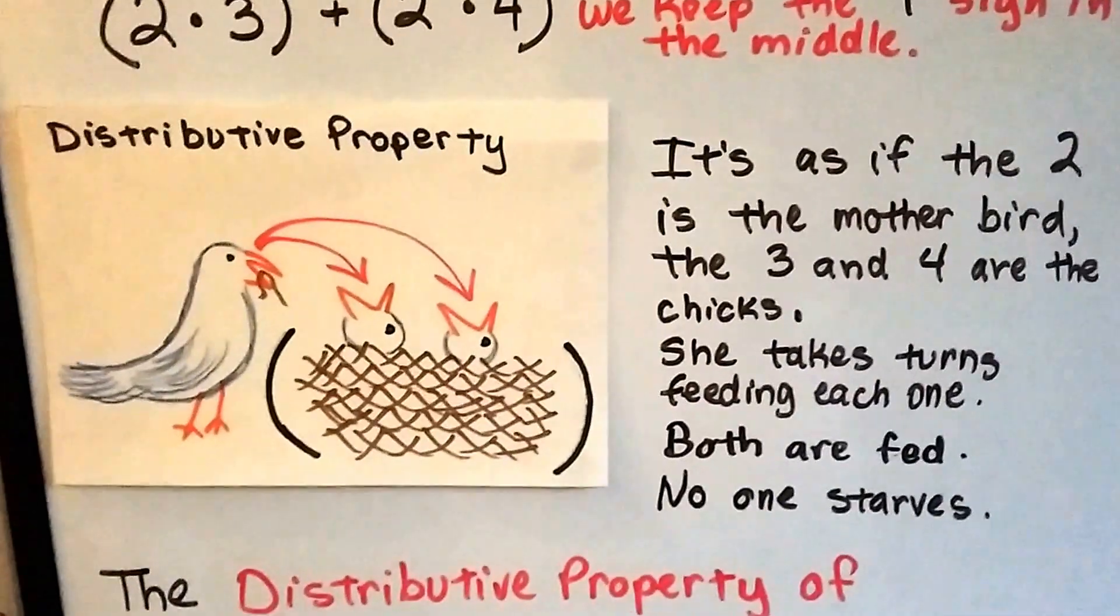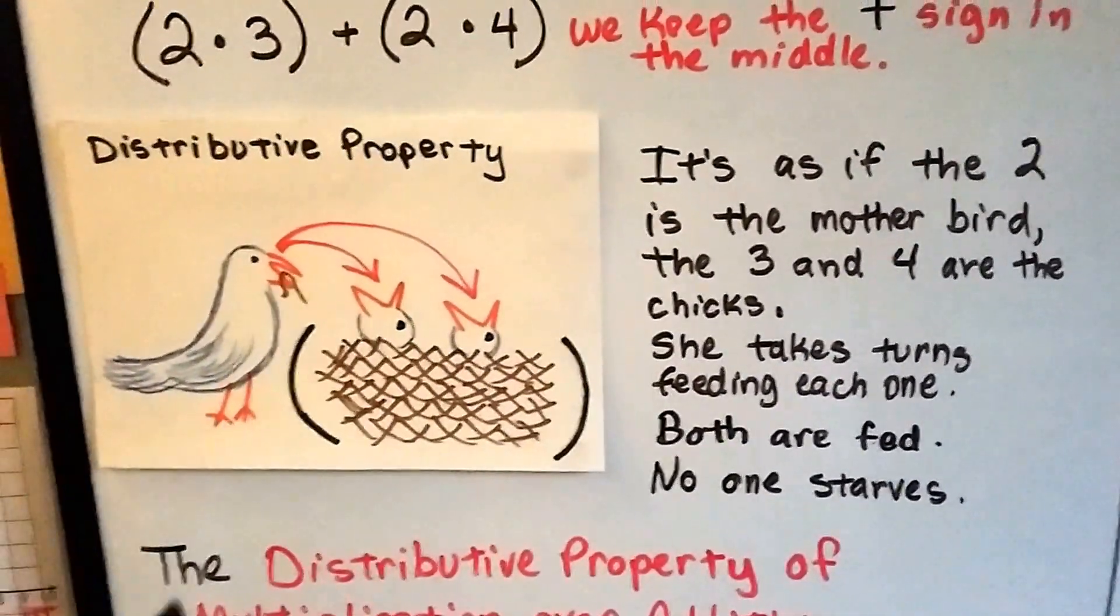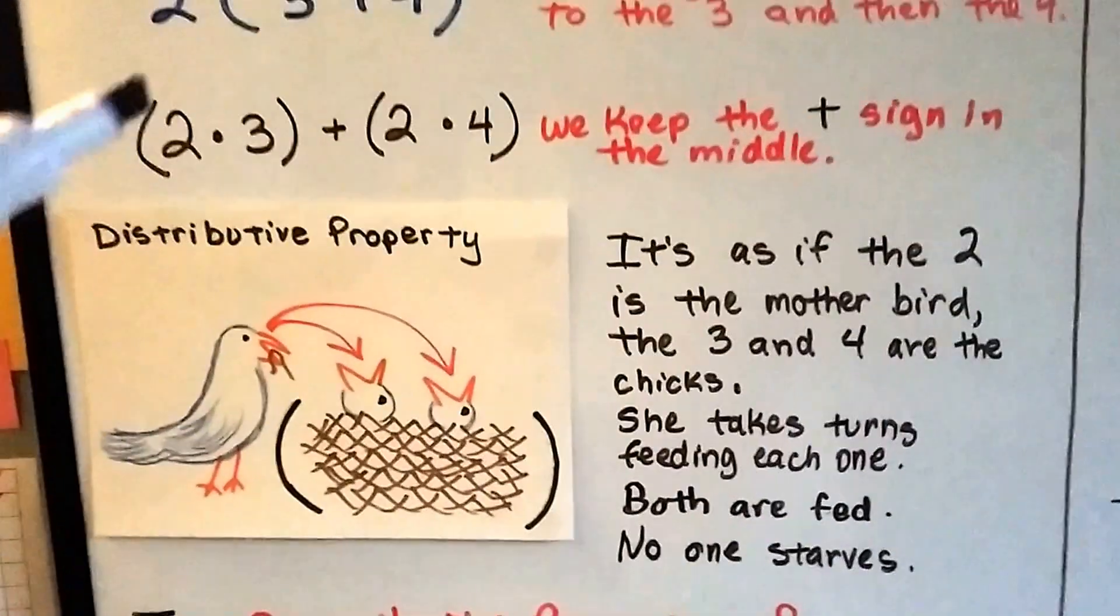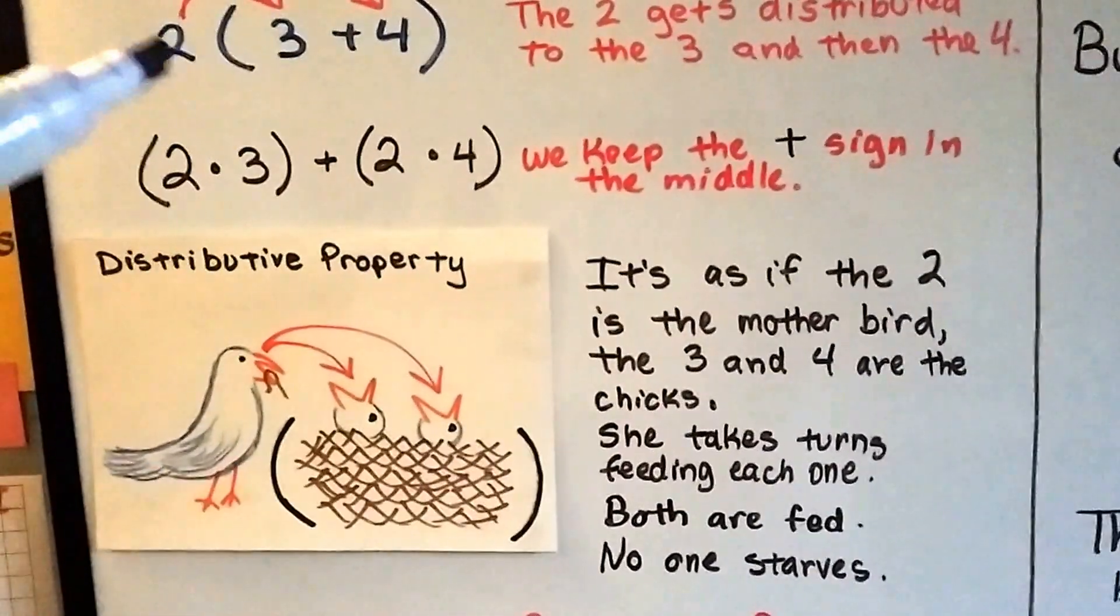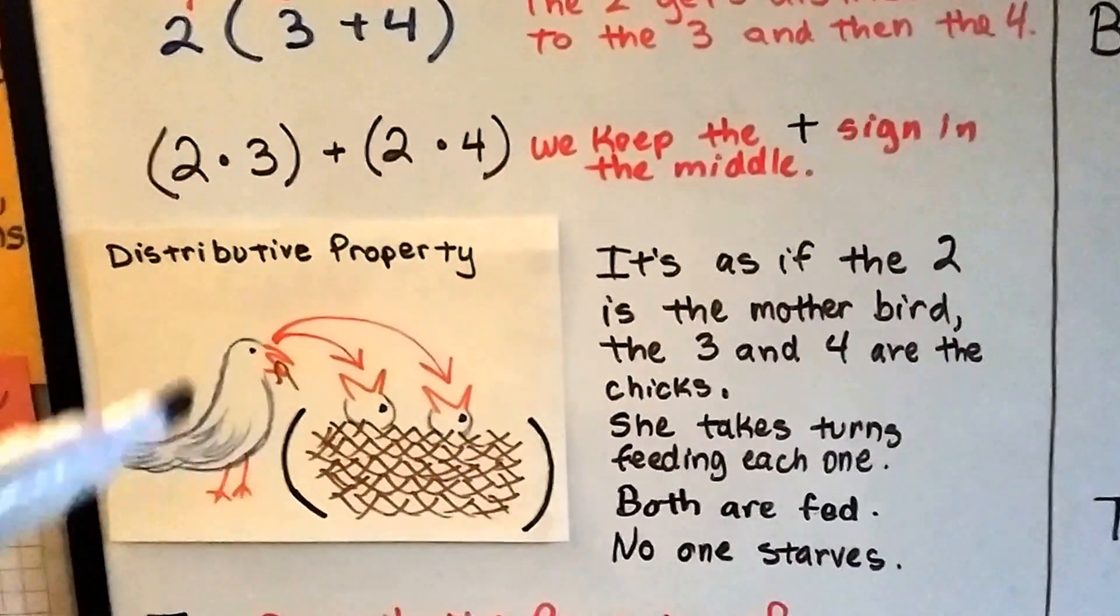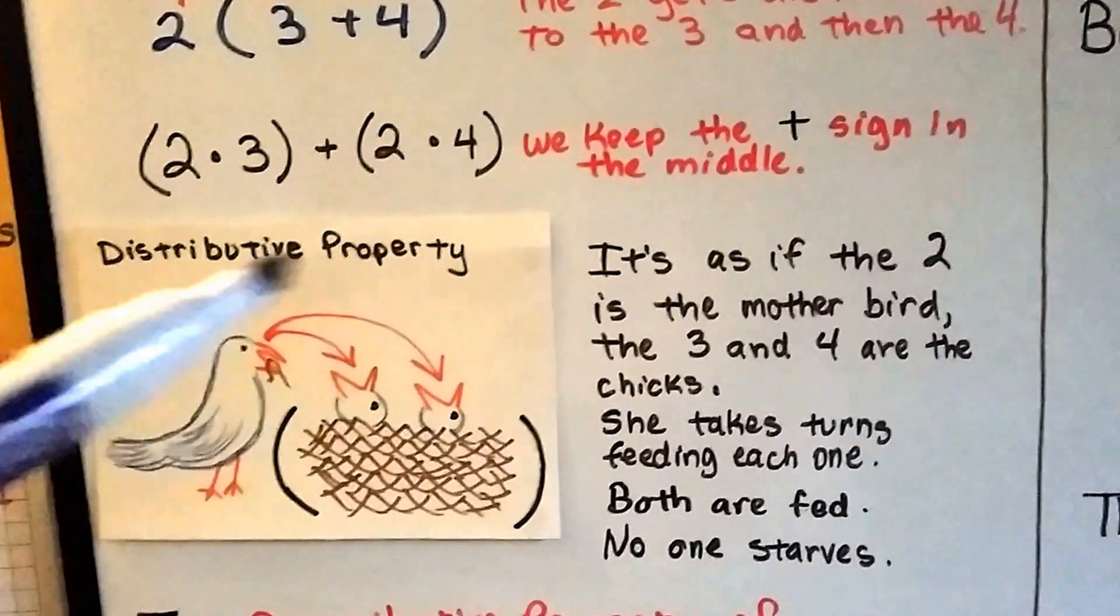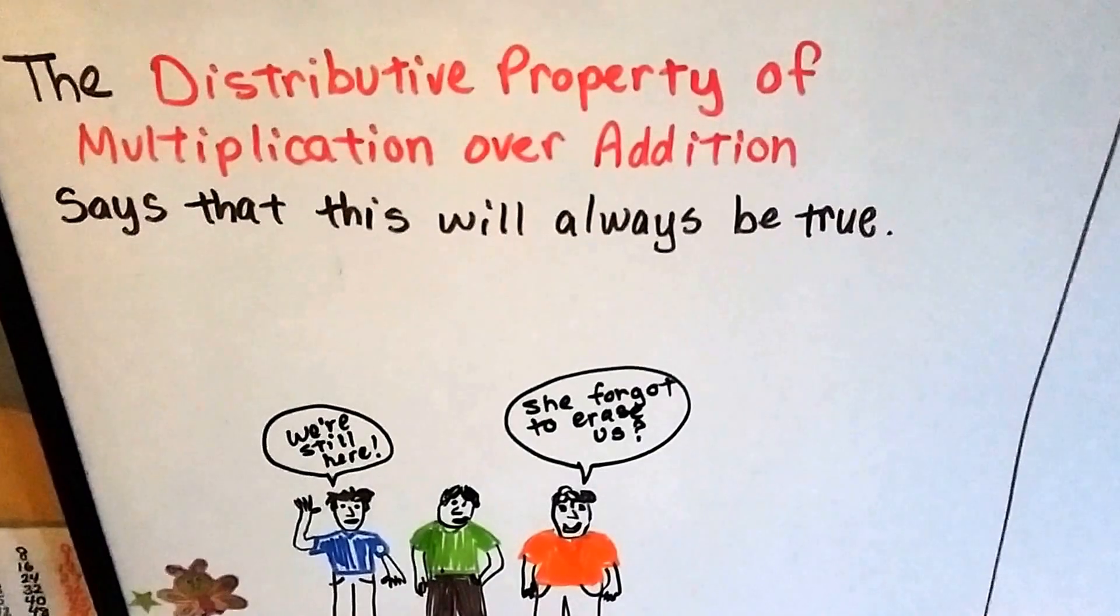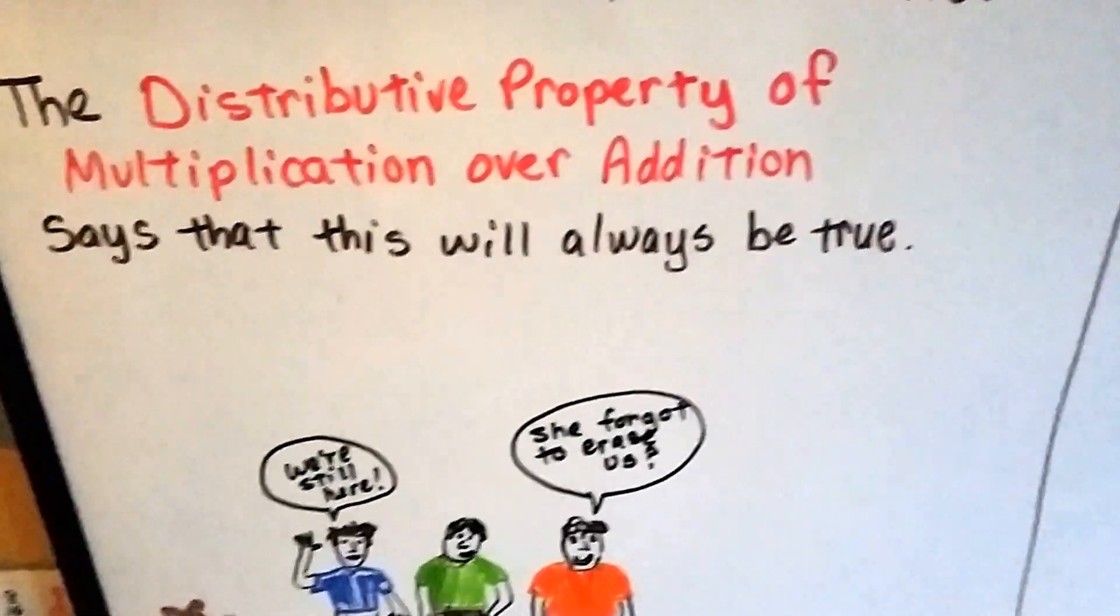Now, if you're a regular subscriber and you've been watching my videos for a while, you know about my mother bird and the parentheses nest. It's as if the 2 right here is the mother bird and the 3 and the 4 are the little chicks. And she takes turns feeding each one. No one starves. They're both fed. And the distributive property of multiplication over addition says that this is always true.